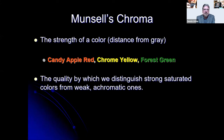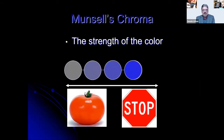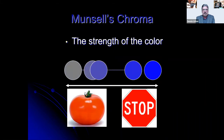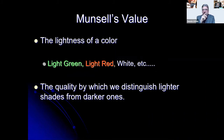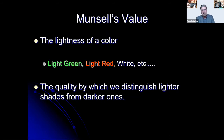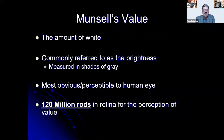Munsell's chroma is the strength of a color — its distance from gray — like candy apple red, chrome yellow, or forest green. It's the quality by which we distinguish strong saturated colors from weak achromatic ones. Value is the lightness of color — light green, light red, or white versus dark. Value is the amount of white in a shade. There are 120 million rods in the retina for perception of value, and as noted earlier, value lasts longer in perception than chroma or hue.